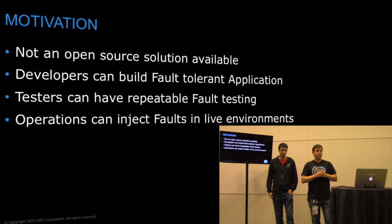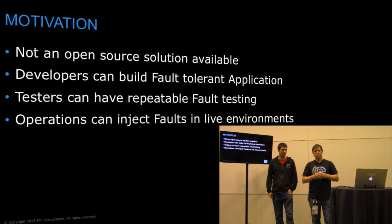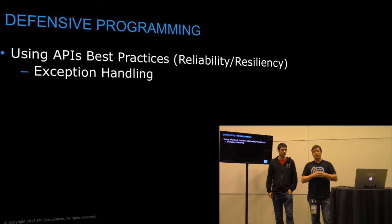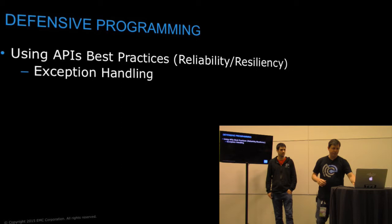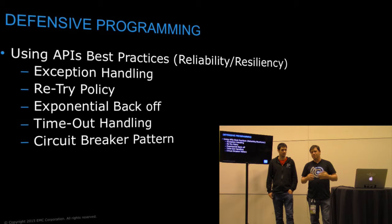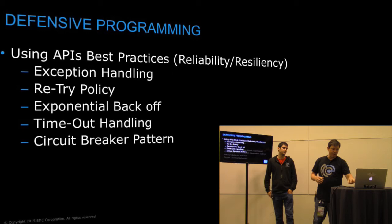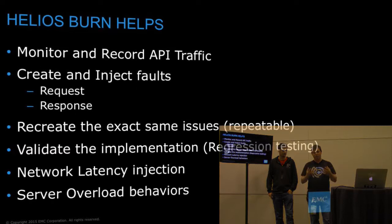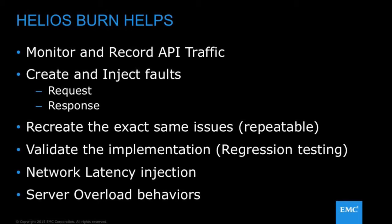A great example for the operations team is Chaos Monkey. How many of you know Chaos Monkey from Netflix? Effectively, they're enabling their operations team to make failures live. Because of that, the developer community has been working hard on finding techniques and tools for defensive programming — starting with typical exception handling, then retry policies, exponential backoffs, timeout handling, and the latest generation uses patterns like the circuit breaker pattern. But how do we test those things? How do you know that all these patterns we've implemented are actually properly tested?